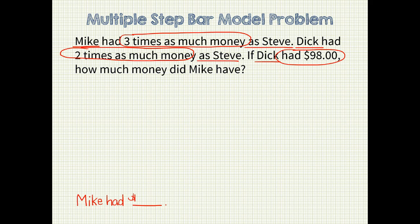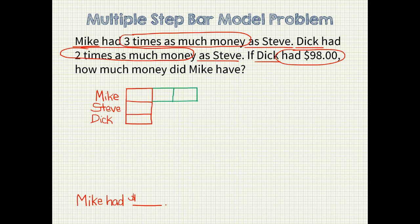Like before, I'll start this problem giving each of them an equal sized unit bar. Now I'll go back and adjust my unit bars. Since Mike had three times as much money as Steve, I will add two more unit bars onto Mike's unit bar. Since Dick had two times as much money as Steve, I will add another unit bar to Dick's unit bar. We are told that Dick had $98, and we are asked to find out how much money Mike had, so I will add a question mark at the end of Mike's unit bar.